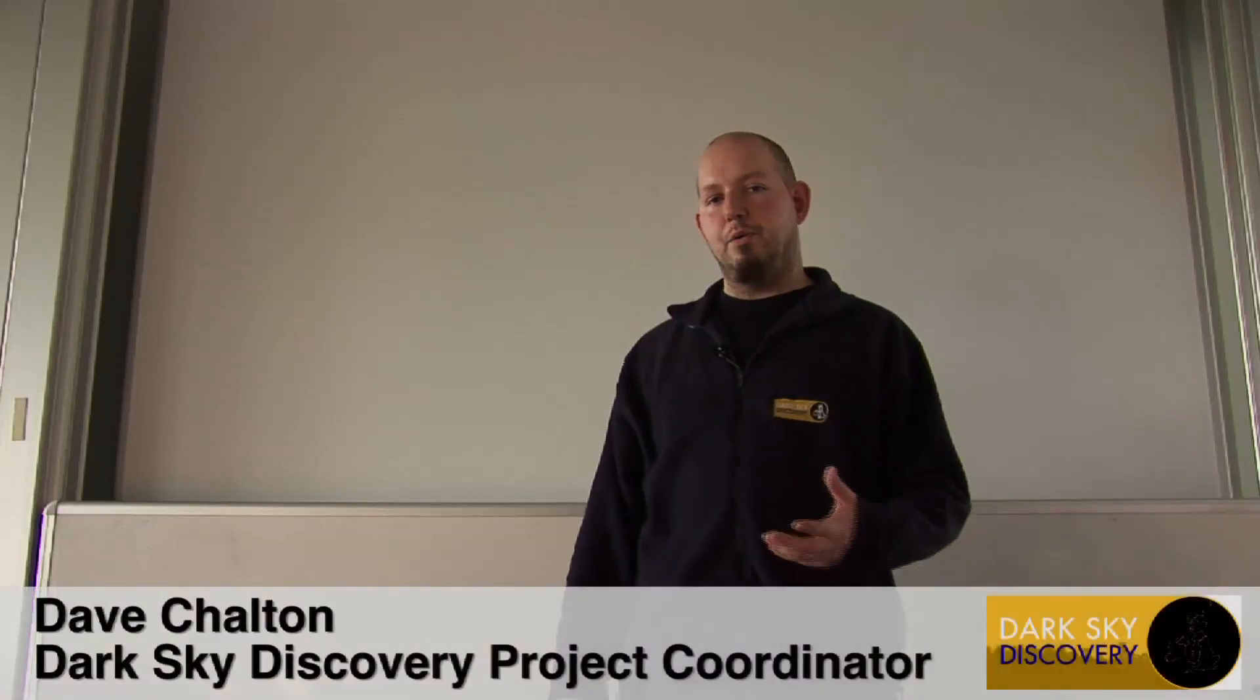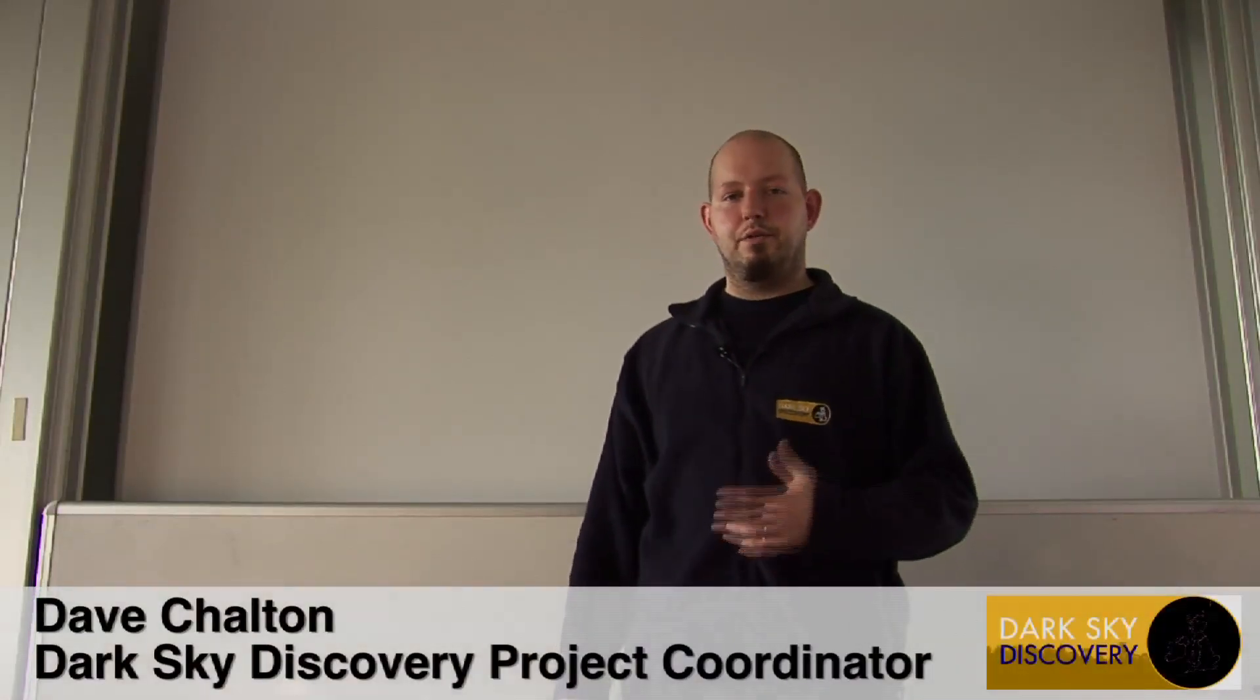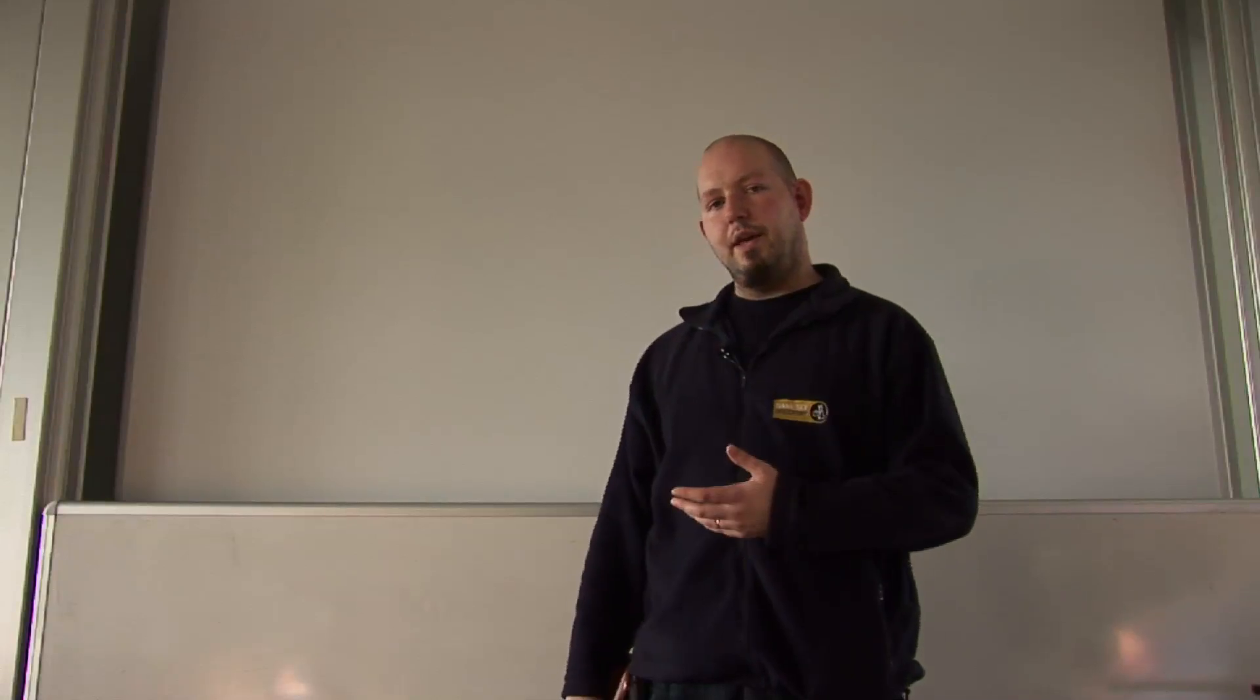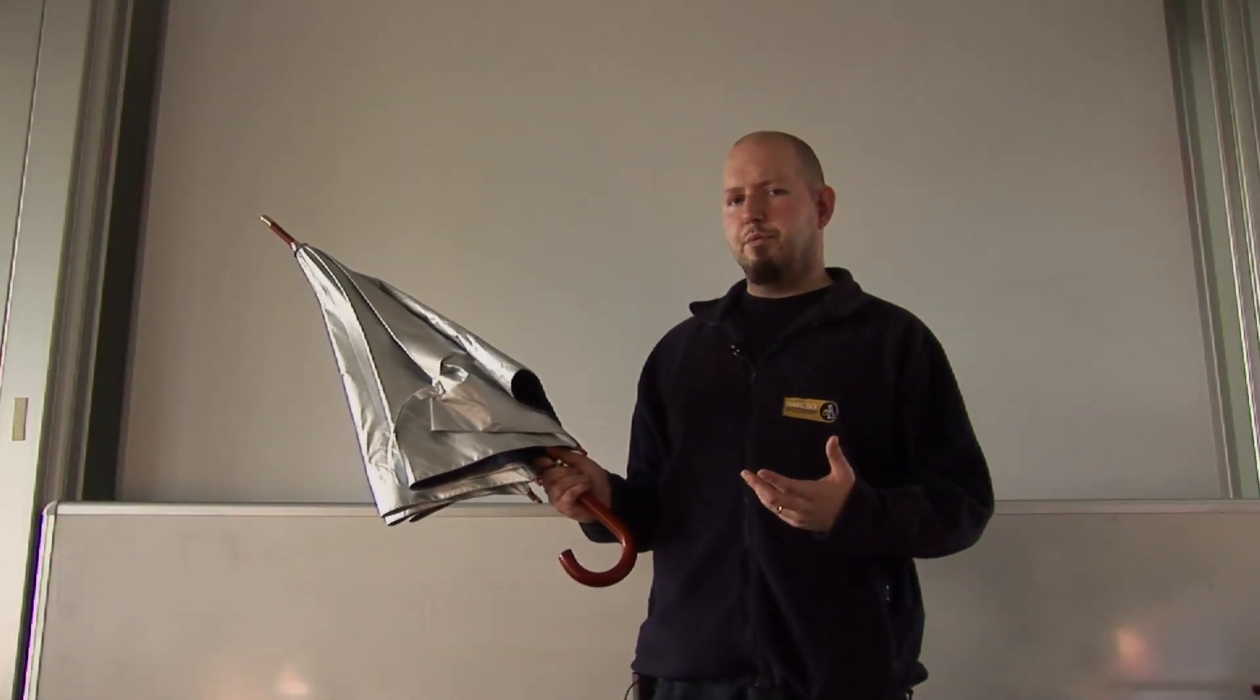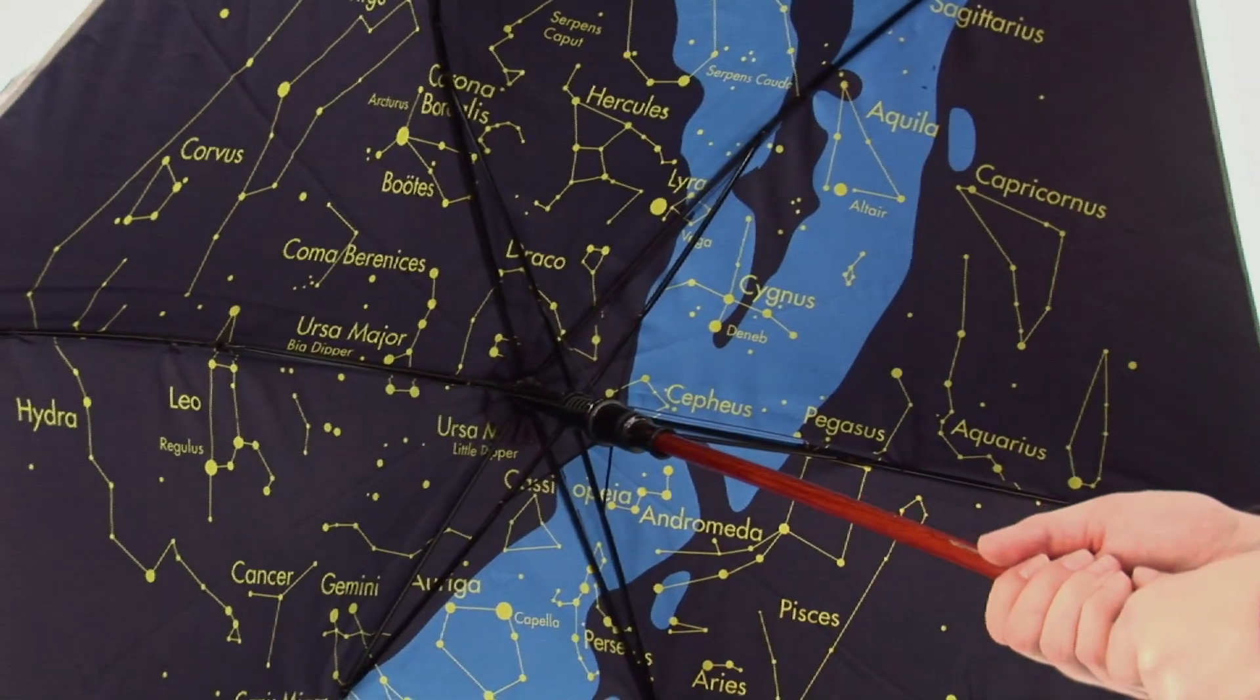Today we're going to talk about how and why the sky changes during the day and also on a seasonal basis. To do that we're going to use this umbrella. You might think not the most obvious bit of astronomical kit, but this umbrella is a little bit special.